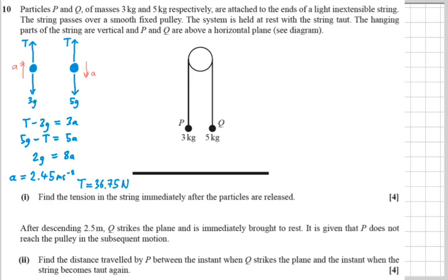Okay, let's go through this. So phase one. Phase one is where Q is accelerating down and P is accelerating up. The string's taut. And as we've calculated before, the acceleration of the system is 2.45 metres per second square.